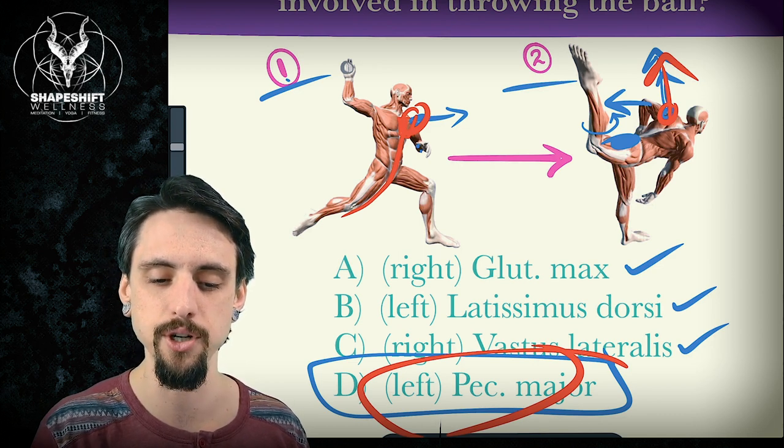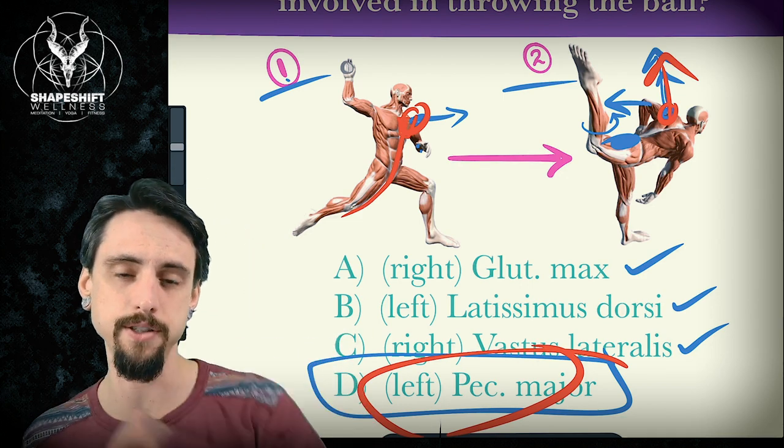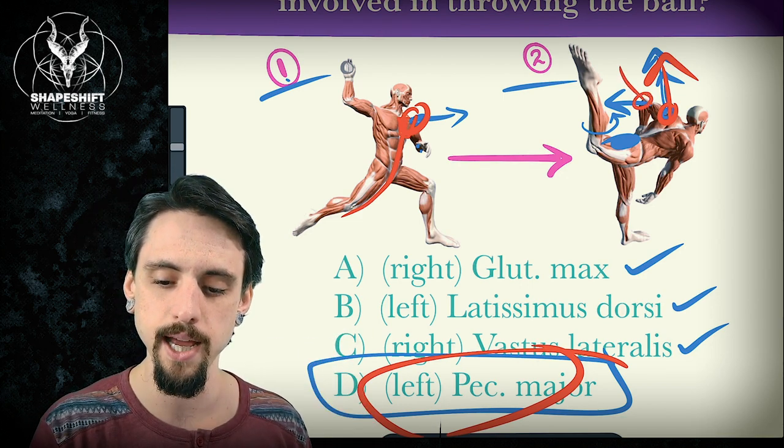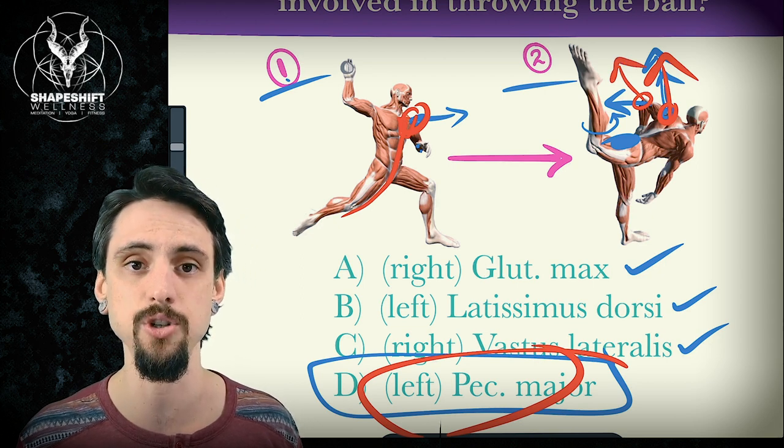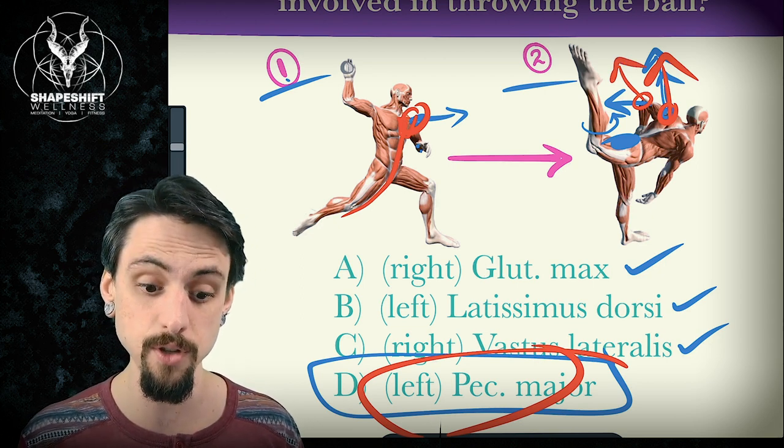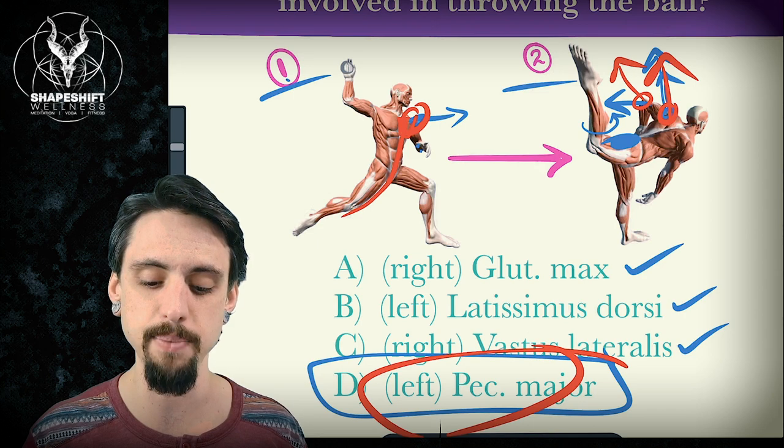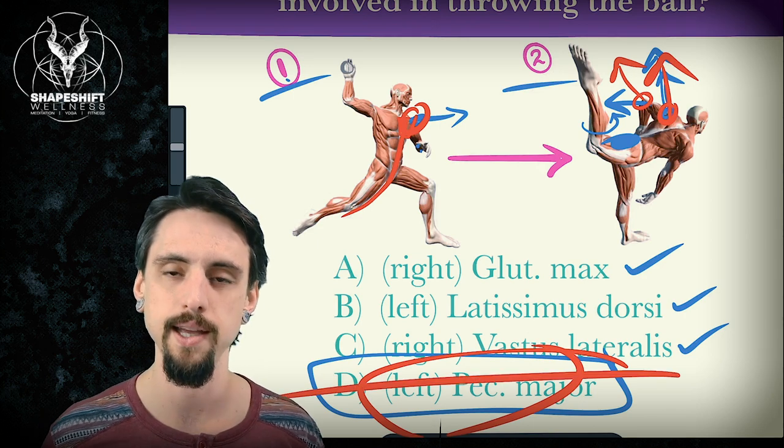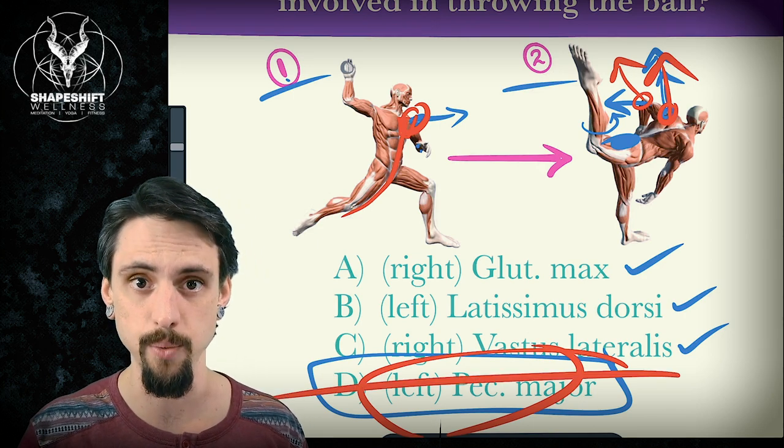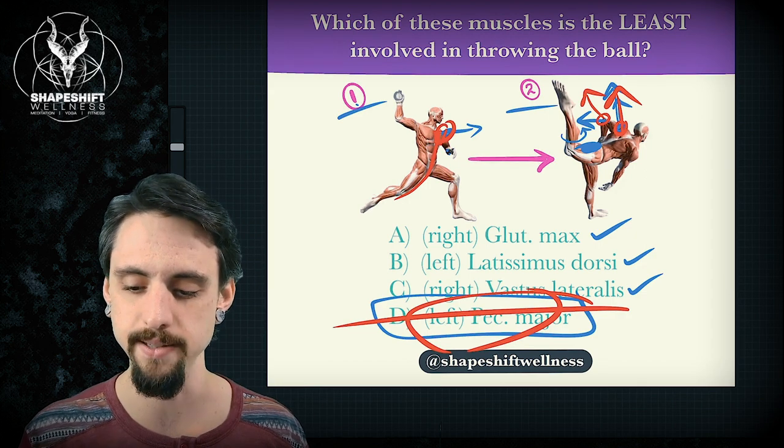Also, the pec major draws the arm forward into flexion, not back behind you. So here's the elbow and the elbow has moved back, which means the shoulder joint has moved into extension. So did the left side pec major work? No, it did not. Not really. Not in a major capacity.